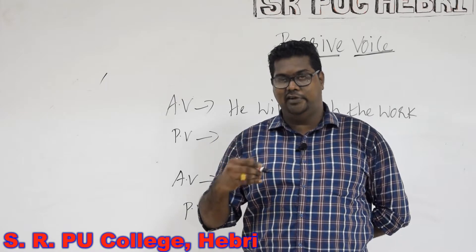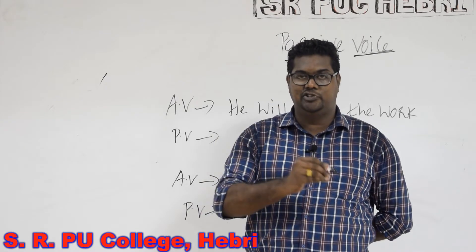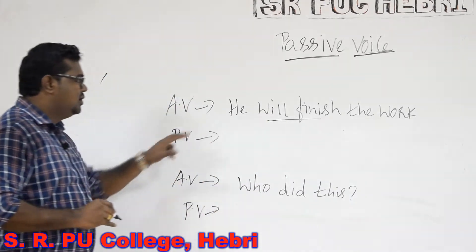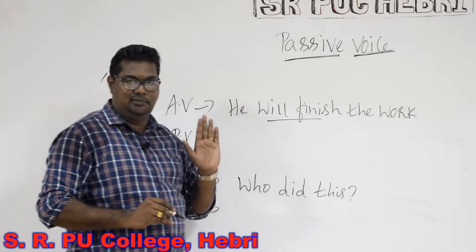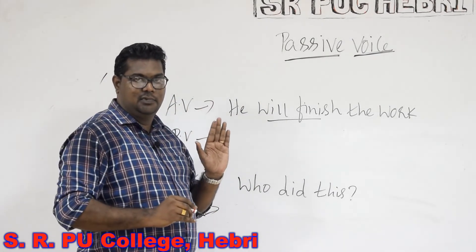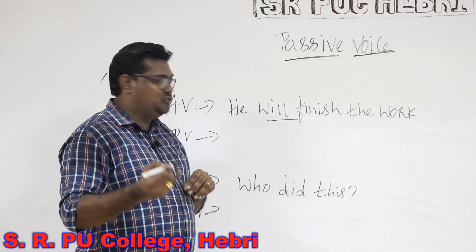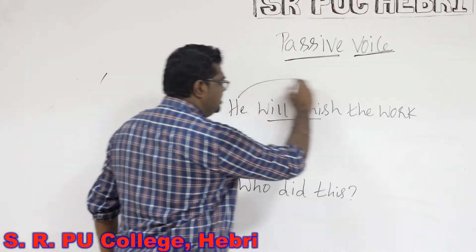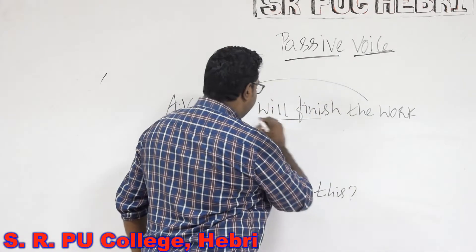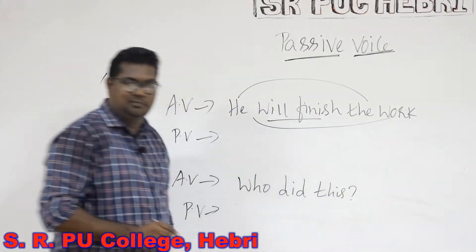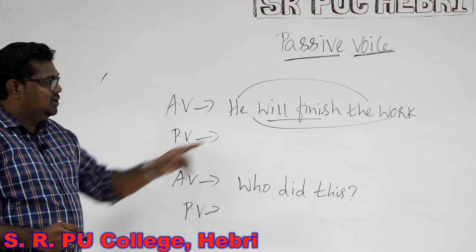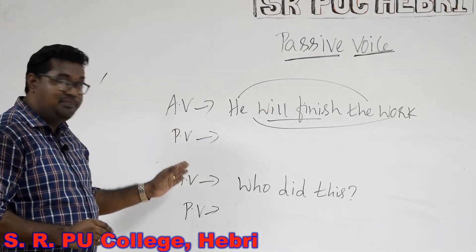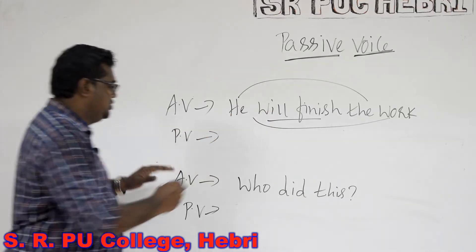Now let us try to change the sentence from active to passive voice. The first sentence: He will finish the work. The first and foremost rule to change a sentence from active to passive voice is to interchange subject into object and object into subject. When you do this, the word 'the work' will become the subject in passive voice.